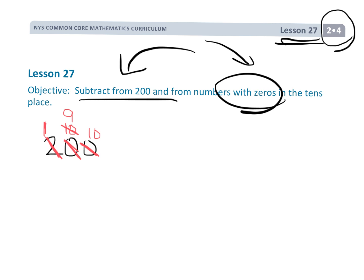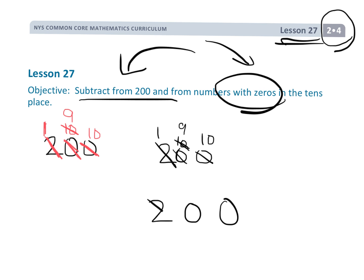Students are going to learn they can do that in two steps — unbundle, regroup, unbundle, regroup — or eventually in one step, where they go ahead and make this a nine and go straight to a ten right here. Eventually students will become proficient at doing it in one step, but for today's lesson I'm going to do the two-step method, though students who are ready to do it in one step are welcome to.